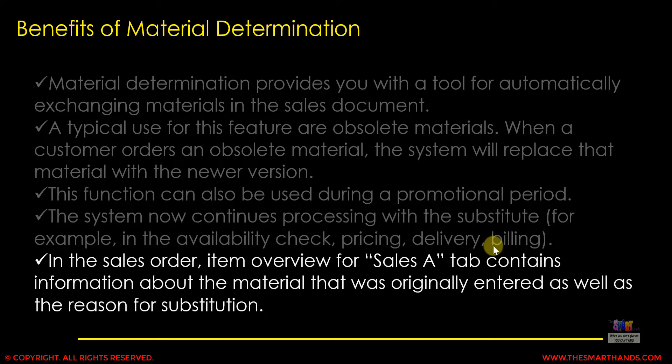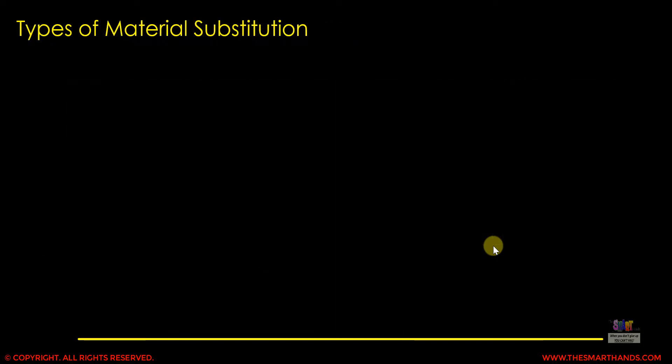In the sales order item overview, the Sales A tab contains information about the material that was originally entered as well as the reason for substitution. You can go to the item level Sales A tab to see the original material and the substituted material. The system keeps a history of what was entered and what was determined.